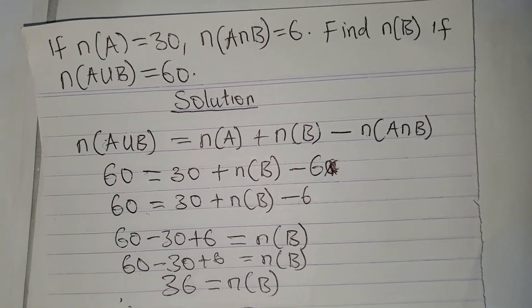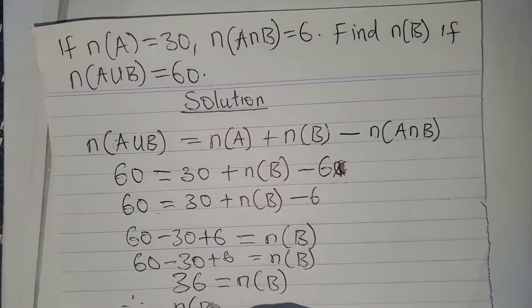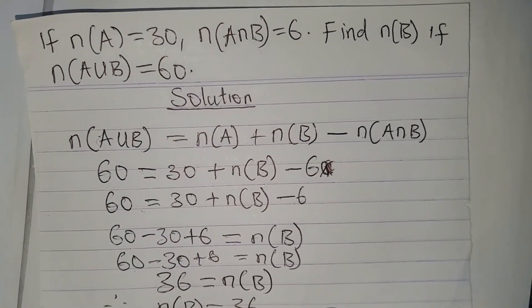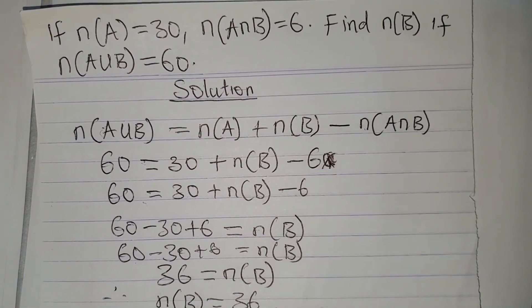Therefore, the number of elements in B is equal to 36. That is our final answer.